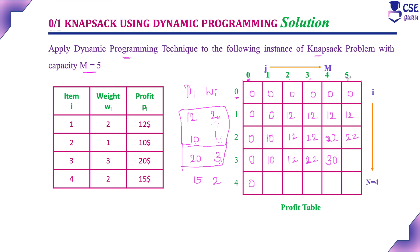When capacity is 5, we can include objects 1 and 3. All 3 objects cannot be included since total capacity would be 6, but available capacity is only 5. Considering all combinations, objects 1 and 3 earn maximum profit of 32. Next, consider all 4 objects. When weight equals 1, it is possible to include only the second object, so profit earned is 10.